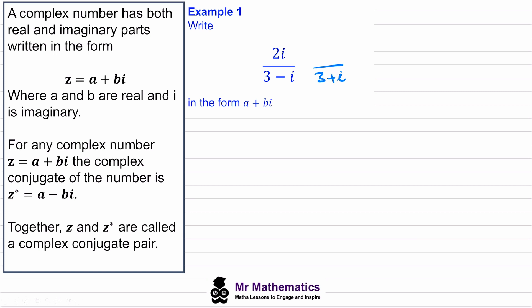We've changed negative i to positive i, and the numerator must also be three plus i because in effect we're multiplying the fraction by one. So we'll multiply these two together. To write it in the required form we'll expand the numerator: 2i lots of 3 plus i, over 3 minus i multiplied by 3 plus i.